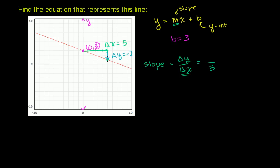We're going down. We're decreasing in y. So our change in y is negative 2. So our slope is negative 2 fifths. So we figured out the slope and the y-intercept. We can now write the equation that represents this line.